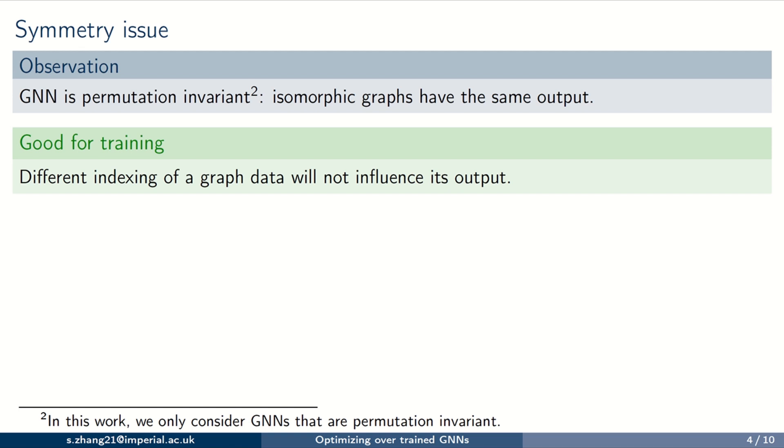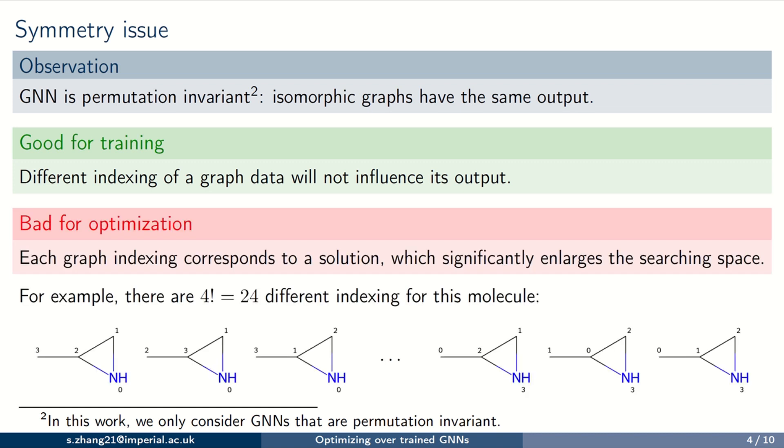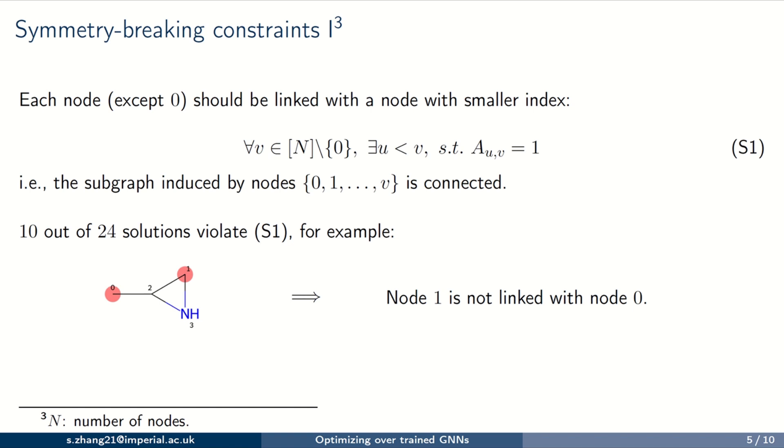the first challenge is the symmetry issue. That is, isomorphic graphs have the same output due to the permutation invariance of GNNs. This invariance is good for training since we don't need to care about different indexing of graphs. However, it's bad for optimization since each graph indexing corresponds to a solution, which will enlarge the search space. For example, there are 24 different solutions for this single molecule.